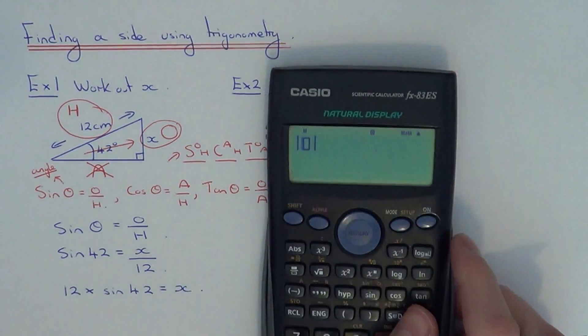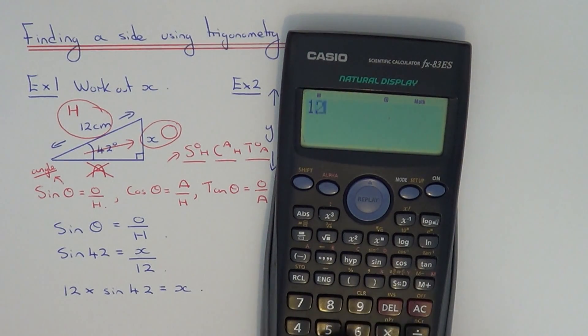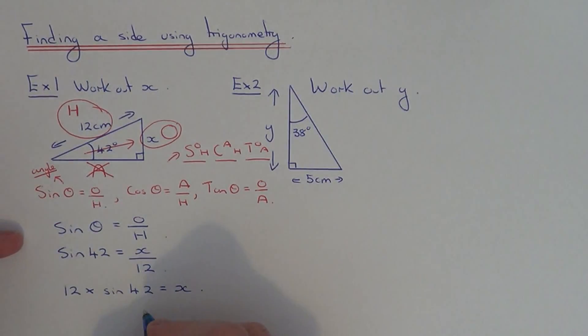If you get your calculator and just type that in now, we do 12 times sin 42. Hit your equals, and that gives you 8.03 cm to 3 significant figures.